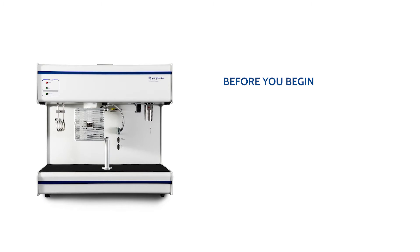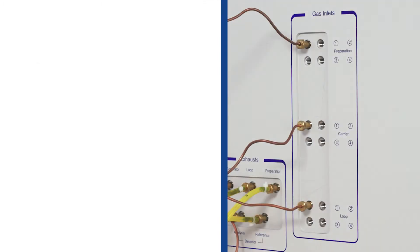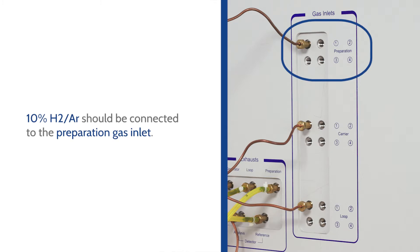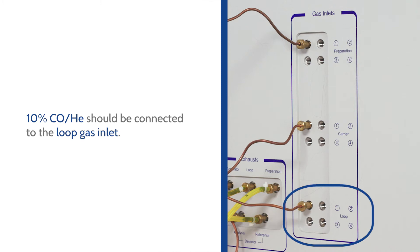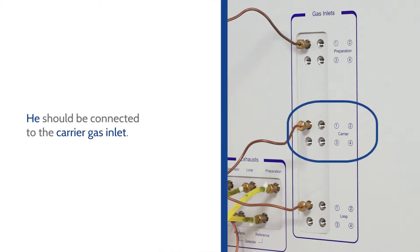There are three items that need to be completed prior to starting an analysis. First, the gases needed for this experiment are 10% hydrogen argon connected to the preparation inlet, 10% carbon monoxide helium connected to the loop inlet, and helium connected to the carrier inlet.